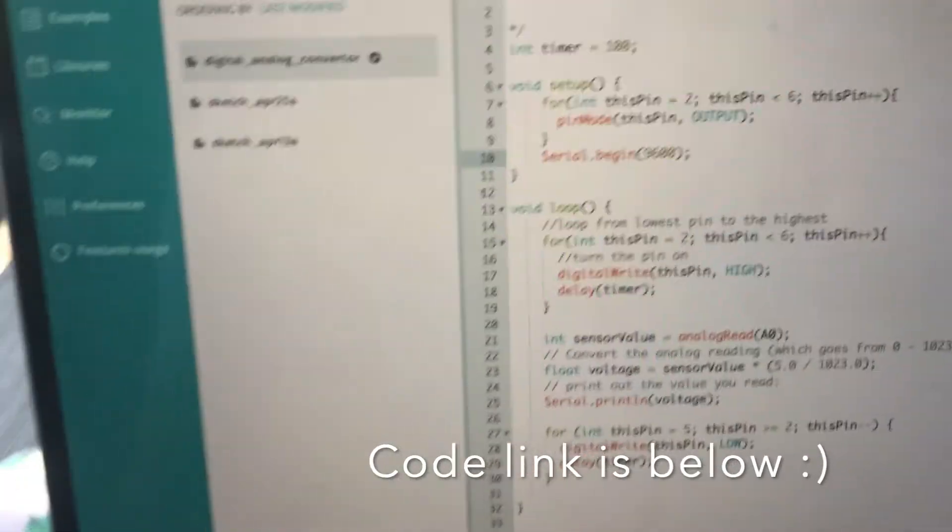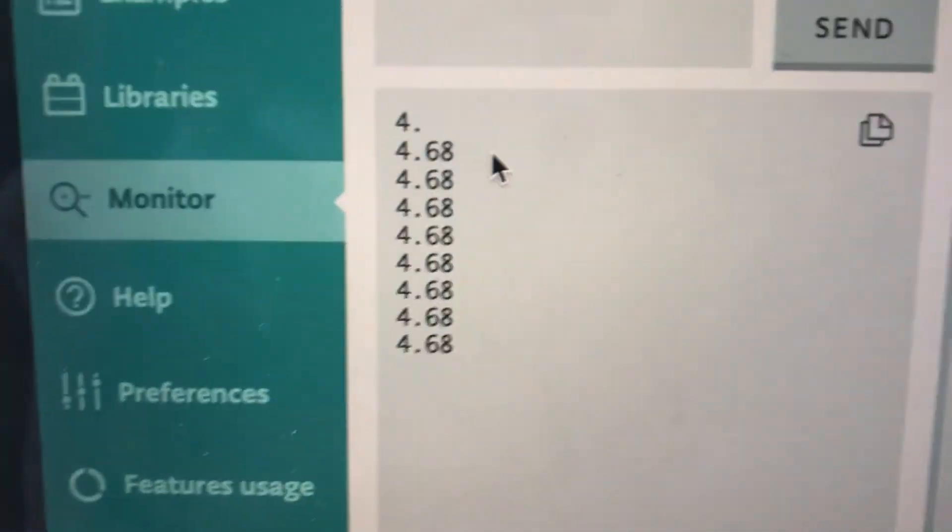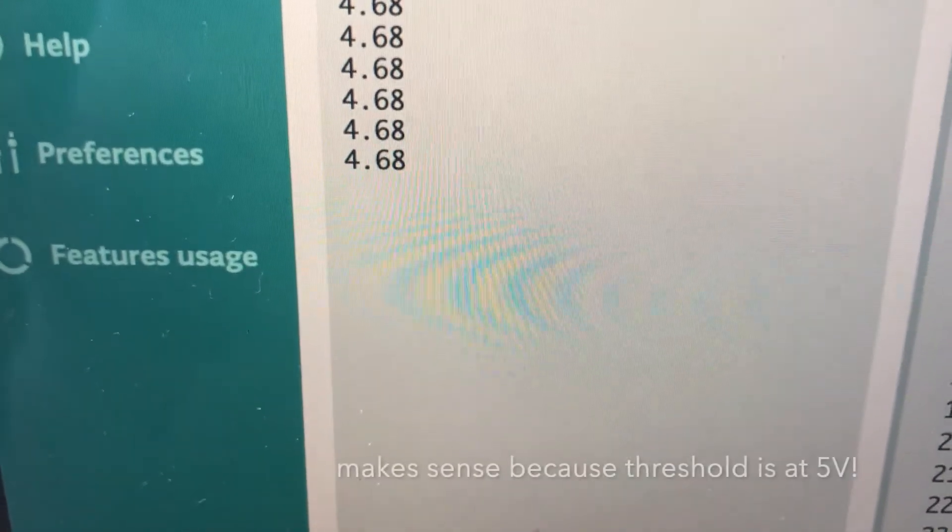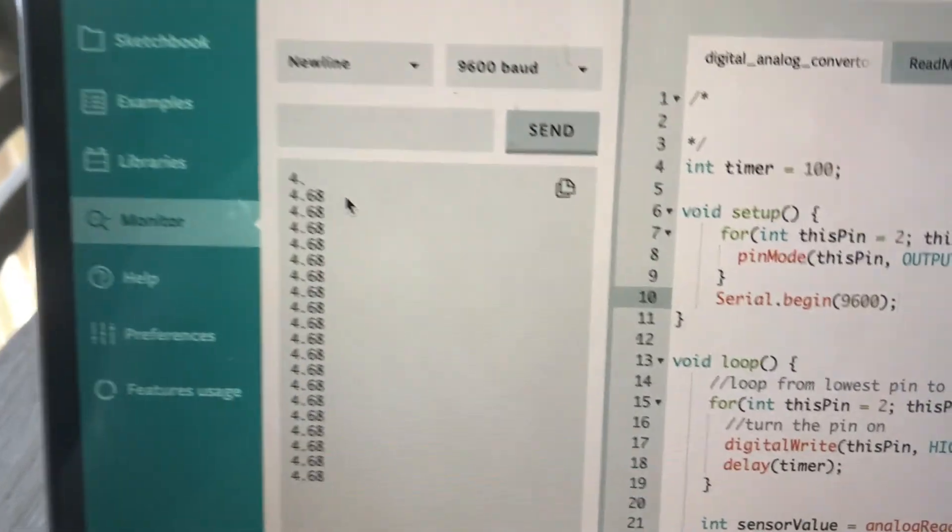And so I then programmed the microcontroller. I'm kind of new to Arduino programming, but I changed the bit inputs to 1s and 0s. And I checked the analog voltages, and it was an analog, continuous form voltage. And I got 4.68-ish, which is pretty accurate when I inputted all 1s.